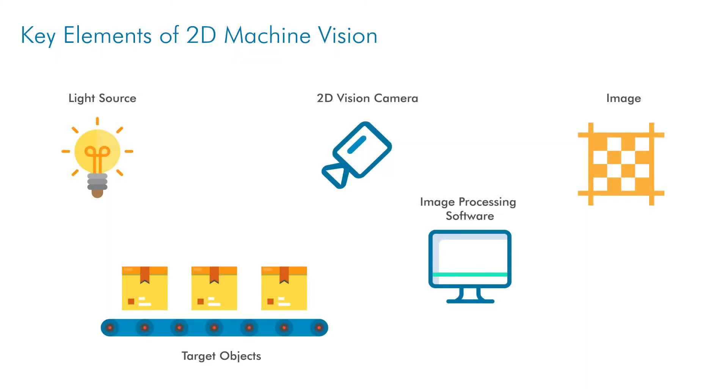2D machine vision devices are by far the most common form of machine vision, and it is the most easily relatable to, as it is the same type of perception that we as humans have with our eyes. 2D machine vision relies on the gathering of light and identifying features by changes in contrast. There are a wide range of lighting techniques, cameras, configurations, and types to gather information on a huge range of applications.